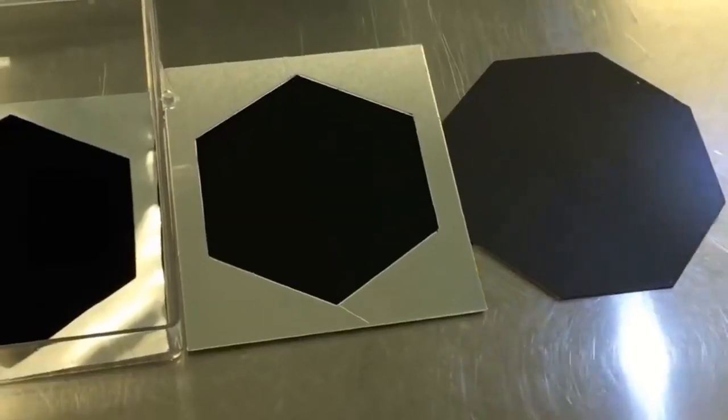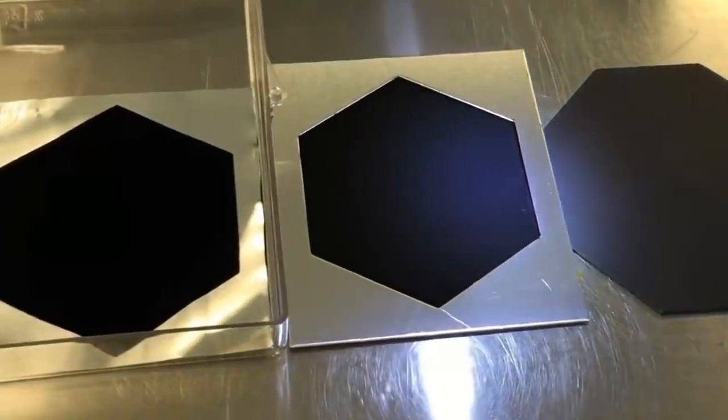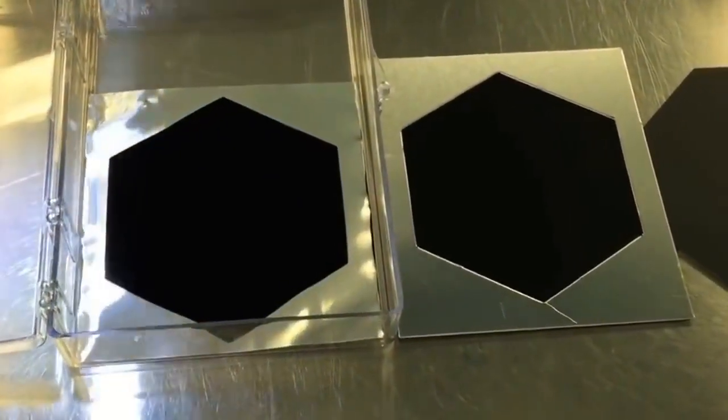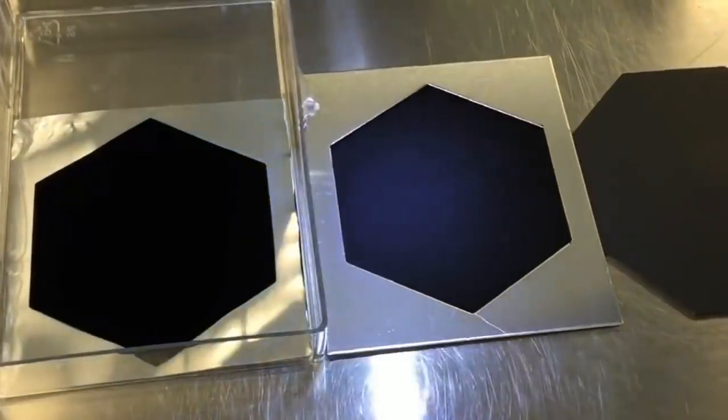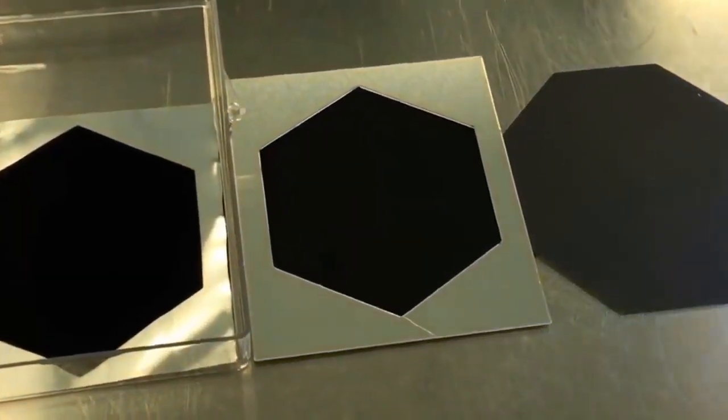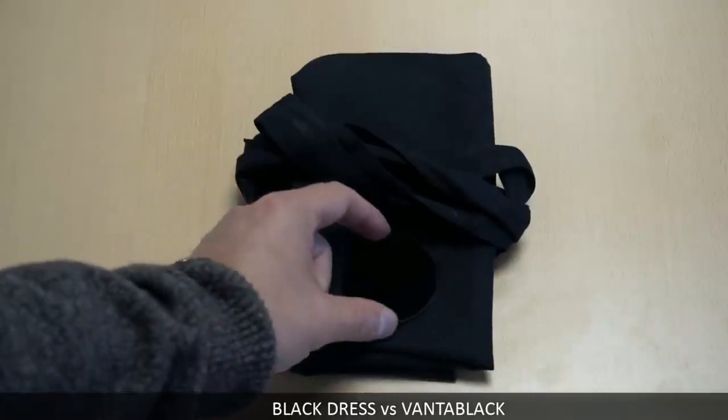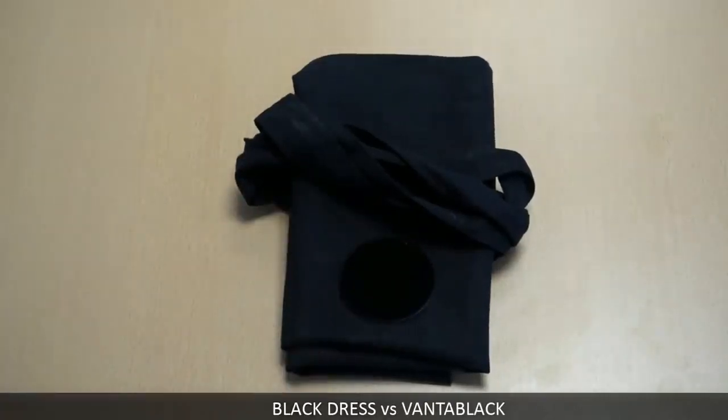If you see it on a flat surface on its own, with no other black material to reference it against, it just looks like a black velvet surface, until you shine a torch on it and no light is reflected back. And when other black surfaces sit side by side with it, they look grey in comparison.